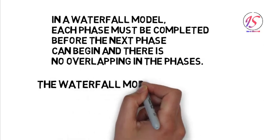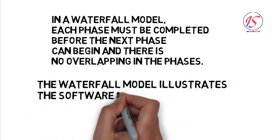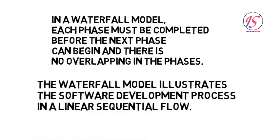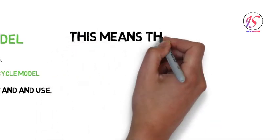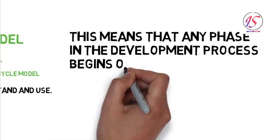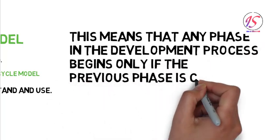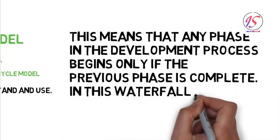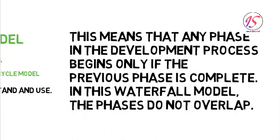The Waterfall Model illustrates the software development process in a linear sequential flow. This means that any phase in the development process begins only if the previous phase is complete. In this Waterfall Model, the phases do not overlap.